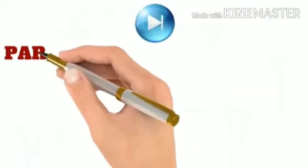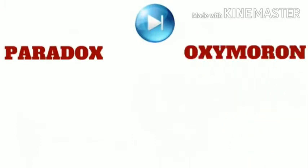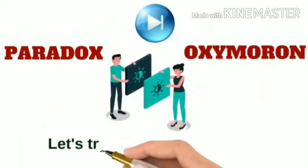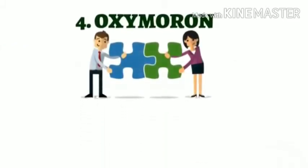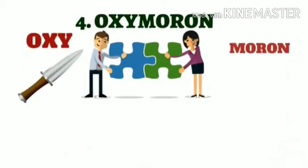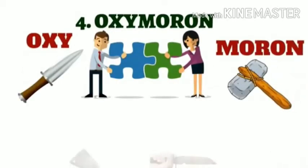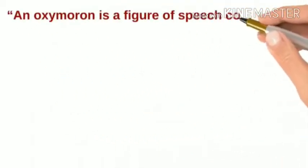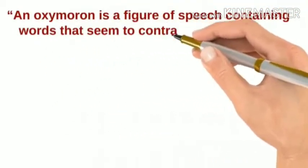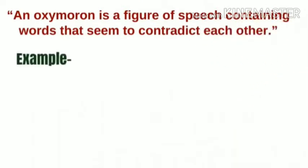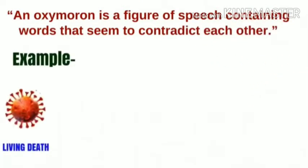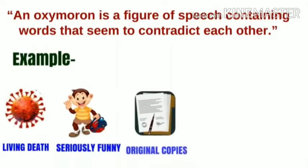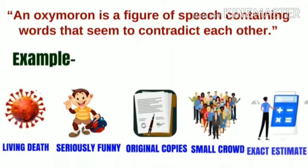Our next two figures of speech — paradox and oxymoron — are closely similar, but let's try to differentiate them. Oxymoron is basically the combination of two Greek words: oxy means sharp, moron means dull. When something is sharply dull, it is an oxymoron. An oxymoron is a figure of speech containing words that seem to contradict each other. For example: living death, seriously funny, original copies, small crowd, exact estimate.